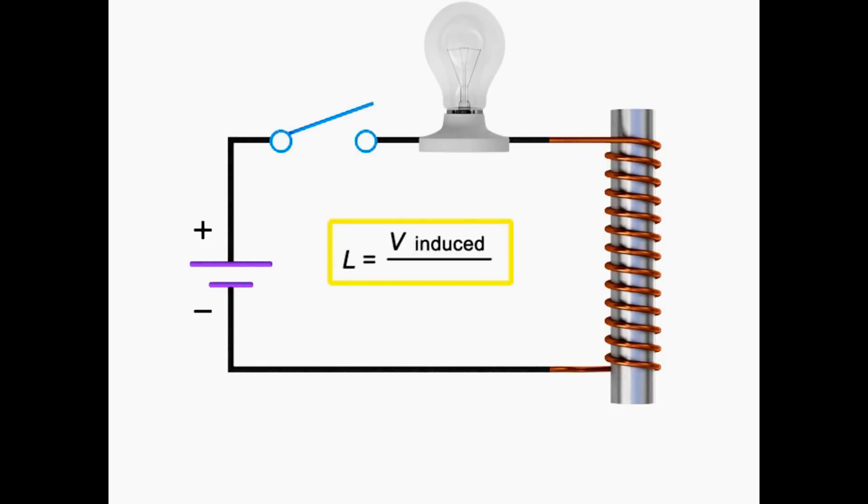Inductance of an inductor is defined as the amount of voltage induced, divided by the change in current per second. Therefore, if 1v is induced by a change of 1a in 1 second, there is 1 henry, or 1 h, of inductance.